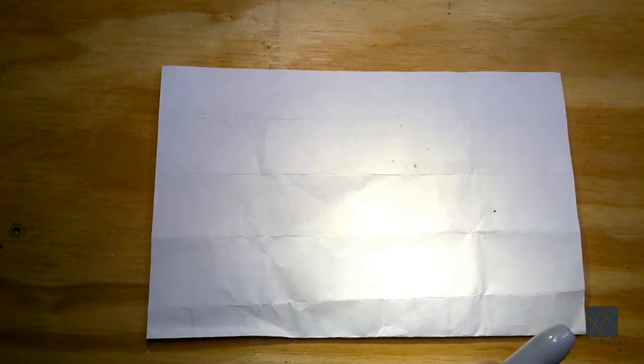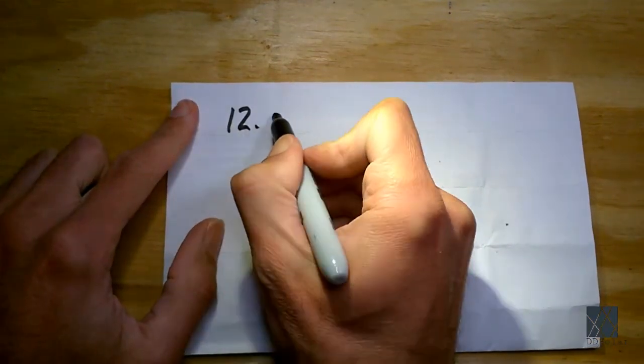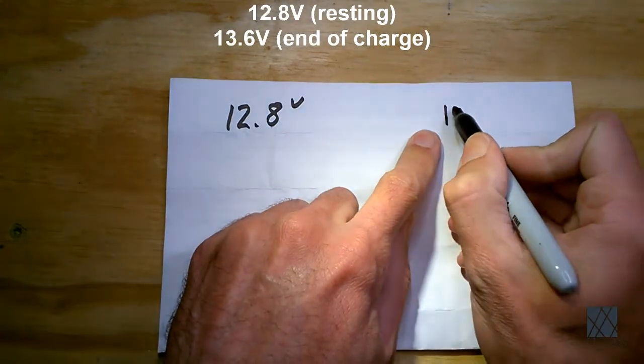But not just any digital voltmeter. I consider my lithium iron phosphate battery pack to be pretty much empty at 12.8 volts and I consider it to be full at 13.6 volts.